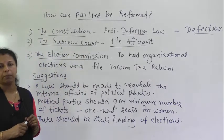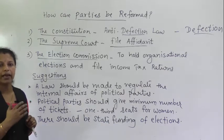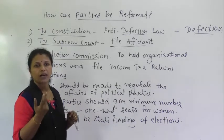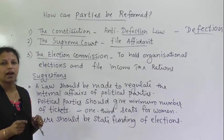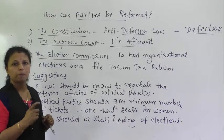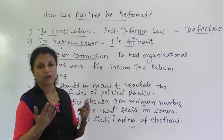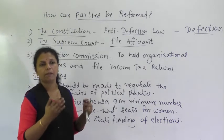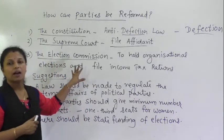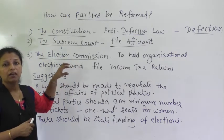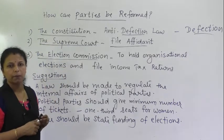These are the three important points to remember — very important organizations and very important reforms taken to reduce the challenges of political parties. First, the constitution discouraged defection through the anti-defection law. Second, the Supreme Court made it mandatory to file an affidavit. Third, the Election Commission made it mandatory to hold internal elections and file income tax returns. These are the compulsory practices going on in India to reform the political parties.